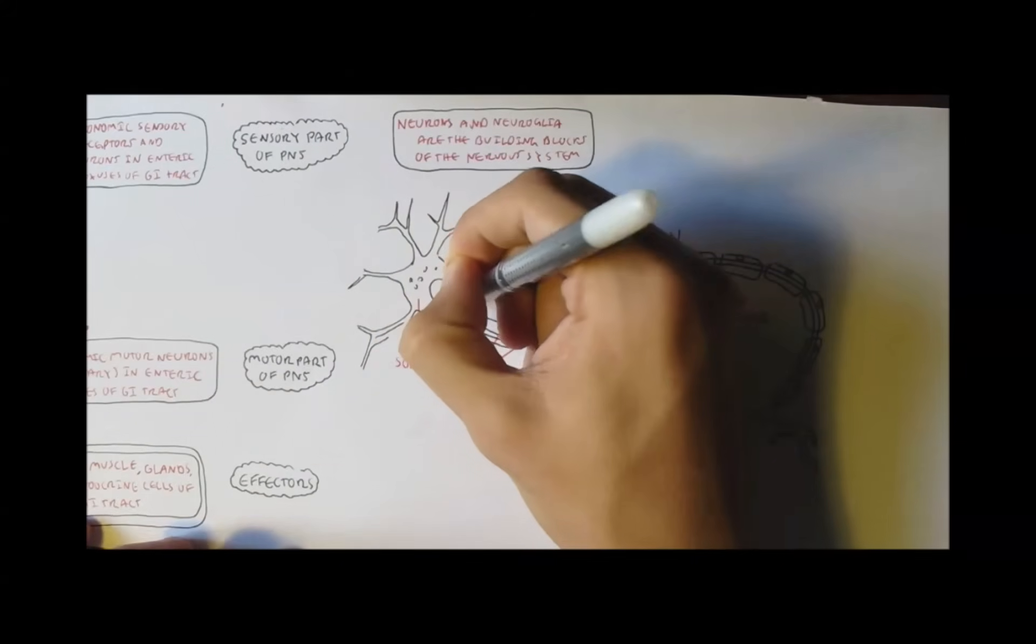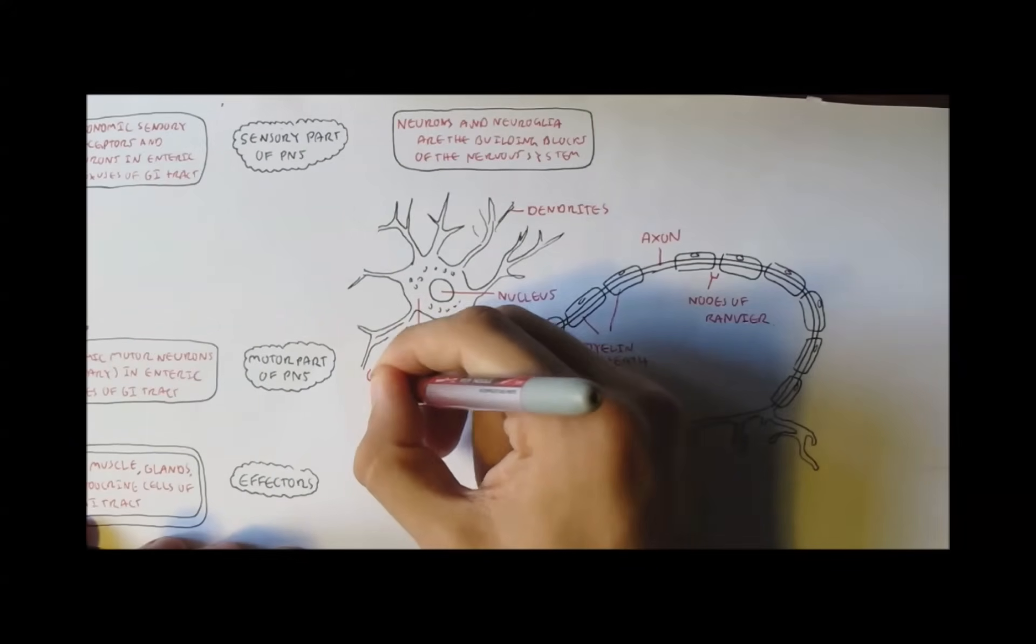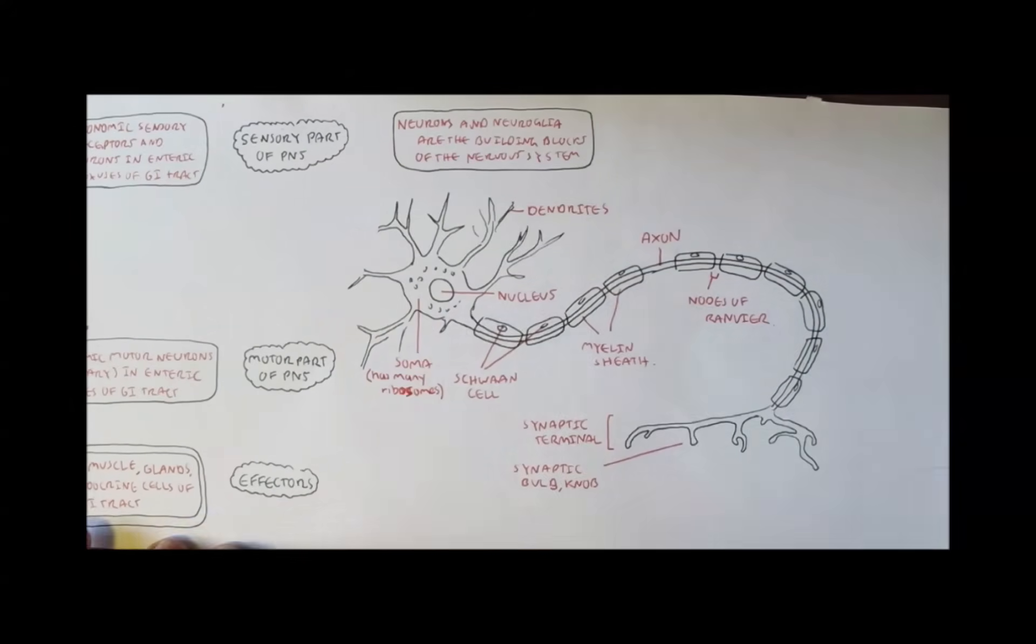The neuron soma can be easily identified because it contains a lot of ribosomes, these round things.